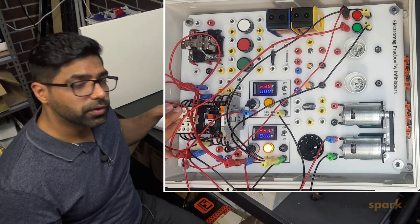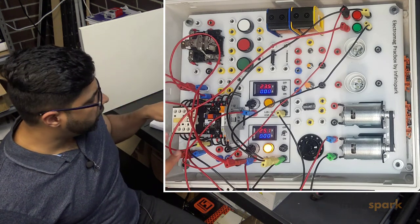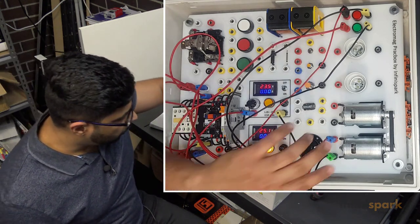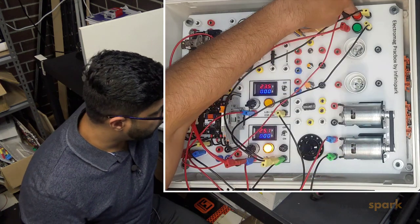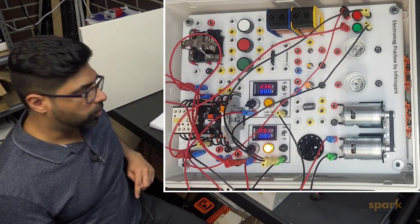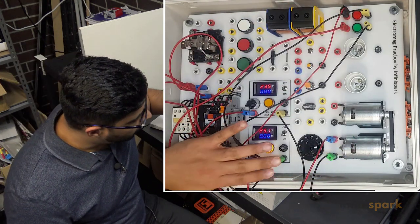You see how as soon as I turn the contactor on, all the contacts in there turned on, and that turned on our motor, this LED, and the green LED as well. They're all powered through this power circuit.